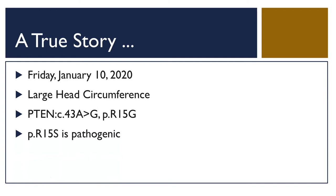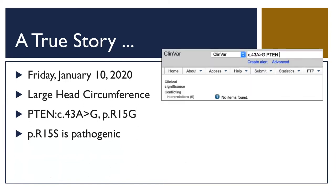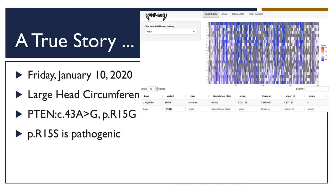We thought this might be interesting given the known pathogenic variant at the same amino acid. We looked it up in ClinVar and there's nothing else there. Having the deep mutational scanning meeting in mind and knowing Doug Fowler, I thought: I need to go find the DMS data for PTEN and see if it helps me classify the variant.